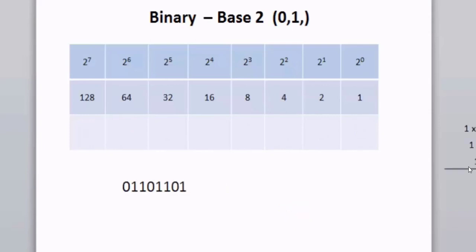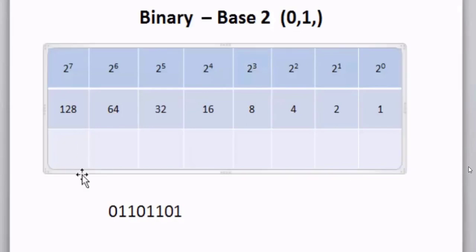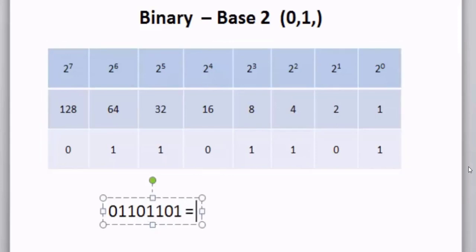Now I'm charged with converting the binary number 0, 1, 1, 0, 1, 1, 0, 1 to decimal. If I want to go the opposite way and convert this binary number to decimal, all I need to do is plug it into the place values. I have a 64 and a 32 — 64 plus 32 is 96. Plus an 8 makes 104. Plus 4 makes 108. Plus 1 makes 109. This number converted to decimal is 109.